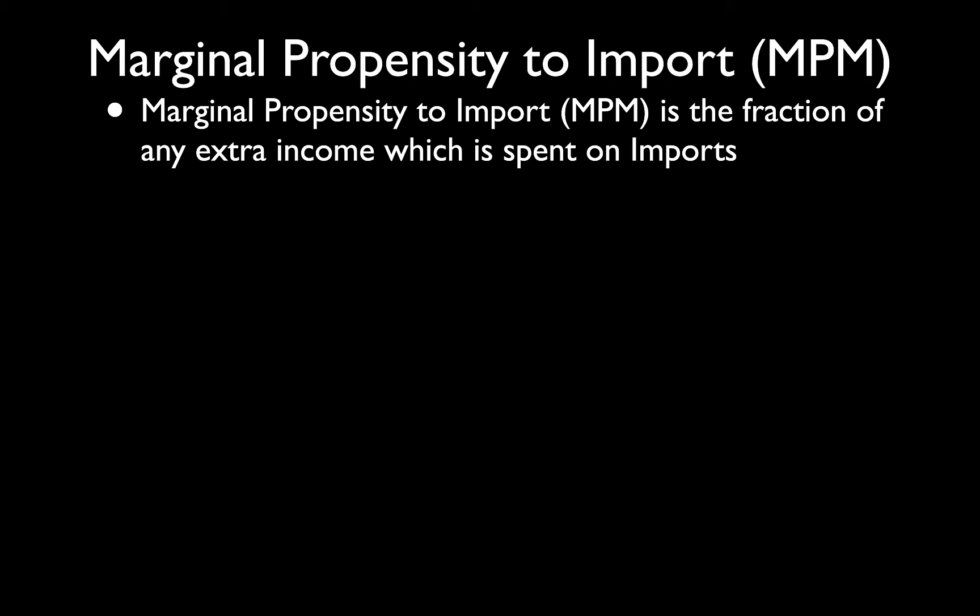Now I want you to see all of the MPs — except for the MPC, which is the opposite of the MPS. We've got the MPS, the MPT, and then the MPM: savings, taxes, and imports. All of those are leakages, and leakages will reduce the size of the multiplier. Keep that in mind. In the next video, we're going to be doing the final and complete version of the multiplier.